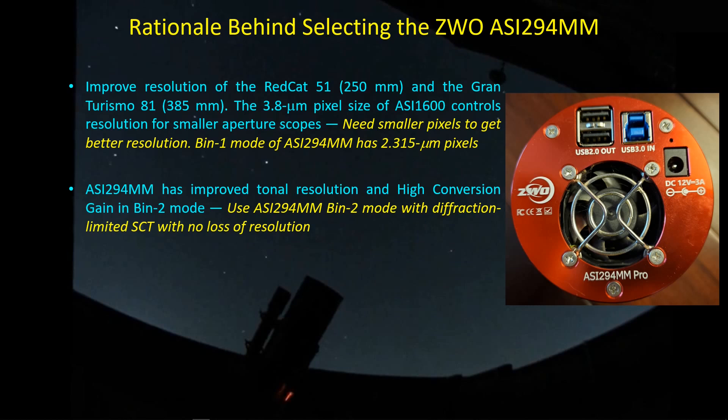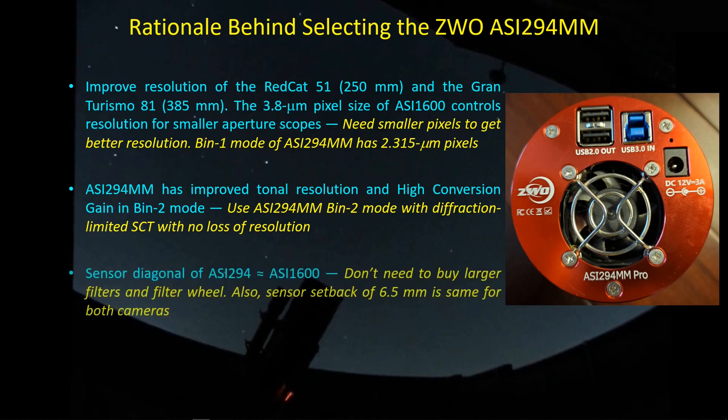That makes it very useful for an SCT, where the bin two pixel size still leaves you oversampled for that kind of scope. And then finally, there's geometry versus dollars. One of the things I wanted to avoid was buying a camera with a larger frame size that forced me to go out and buy larger filters and another filter wheel. So rather than incur that additional cost of $1,500 to $2,000, I wanted to stay within the same geometry that my 31-millimeter or 1¼-inch diameter filters work with.